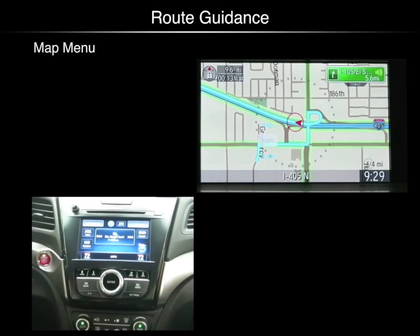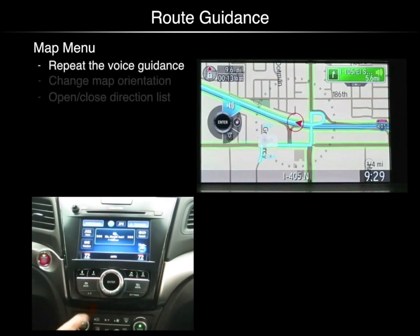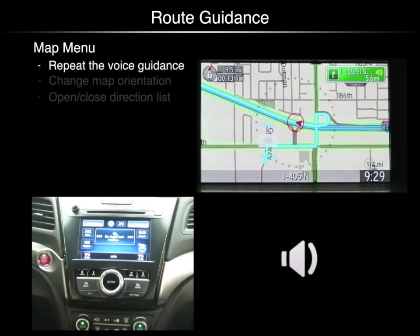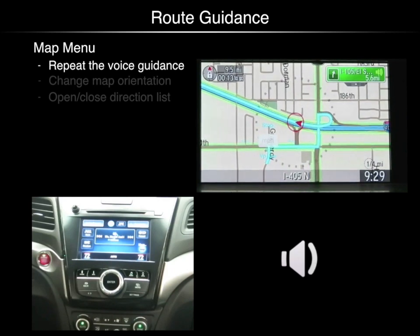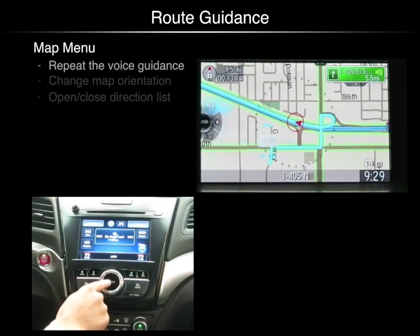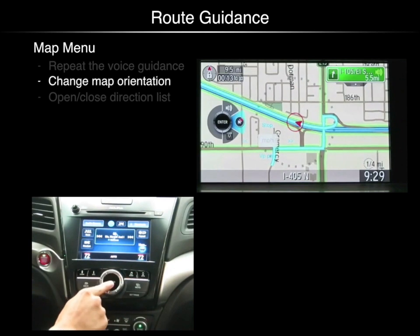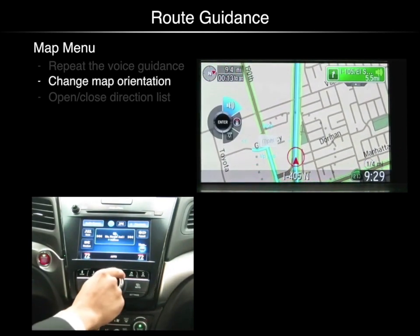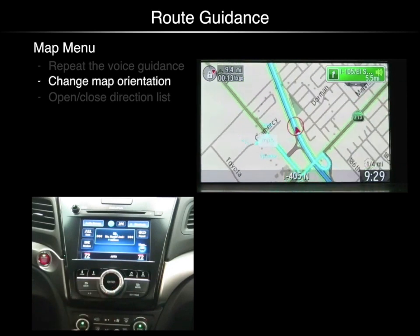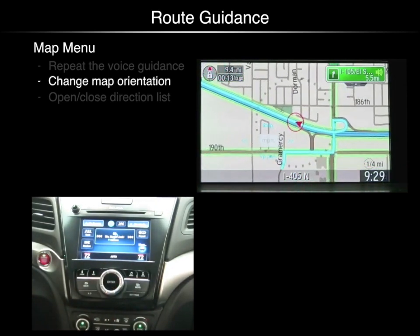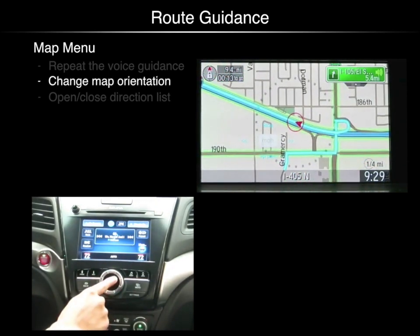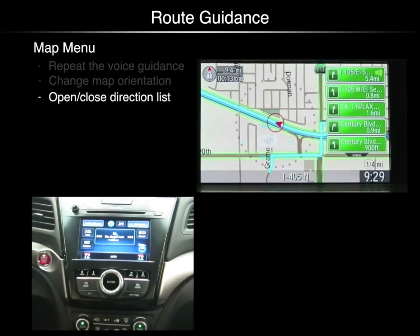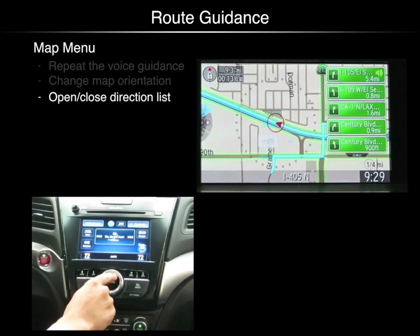Press enter to bring up the map menu. Press it again to repeat the last prompt. You can also change the map orientation using the map menu. You can select heading up or change it back to north up. You can also bring up a turn-by-turn directions list, or hide the directions list.